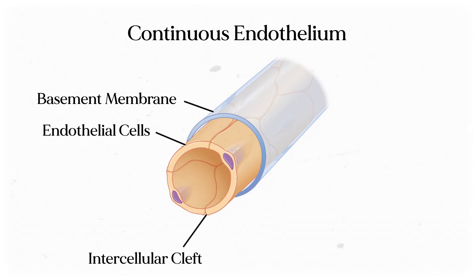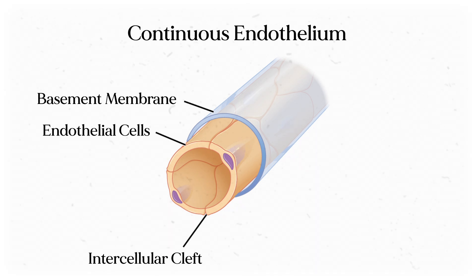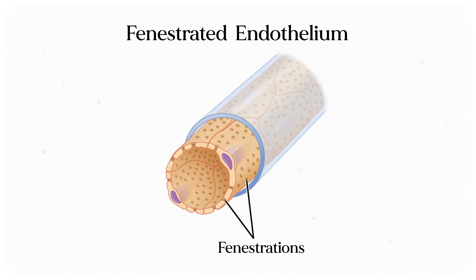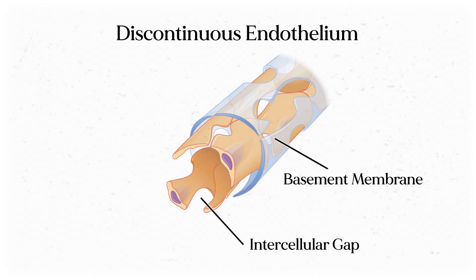Not all endothelial layers are the same. The most common type is a continuous layer of endothelium connected by tight junctions — a smooth tube meant to transport blood. But there are also fenestrated capillaries (Latin for 'window'), which have little pores to more easily transport materials like water and big solutes out of the blood — we saw these in the glomeruli. Finally, we have discontinuous capillaries with bigger gaps between epithelial cells, seen in the spleen, bone marrow, and liver.